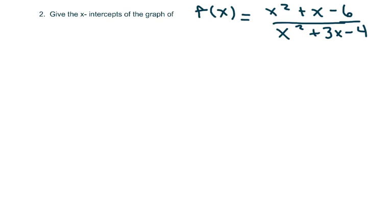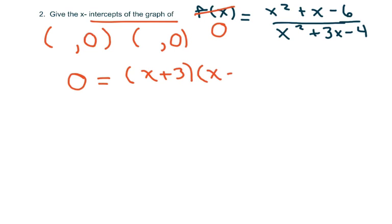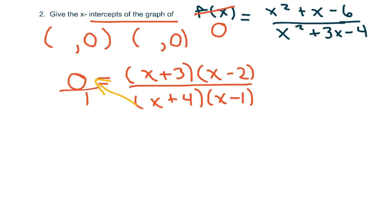The next one we have is give the x-intercepts of this rational function. Basically, remember the x-intercepts is when y is zero, so I'm going to make that zero. So 0 equals, and I'm going to go ahead and factor: x plus 3 times x minus 2 over, the denominator really doesn't matter. That's going to be x plus 4 times x minus 1. When I cross multiply, 0 times my denominator is just 0, so that goes away. Technically, you're just looking at the numerator.